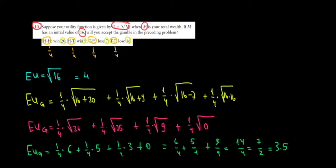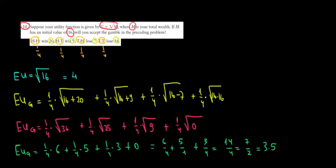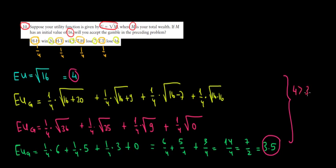Now we compare 3.5 with the expected utility from not taking the gamble, which is 4. The expected utility from not taking the gamble is higher, so we would be happier by not doing it. Therefore, we will not take the gamble. And that's it — we are done.